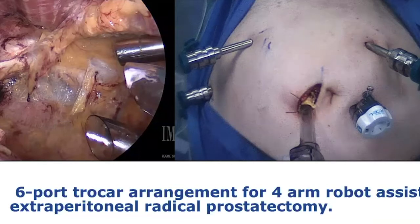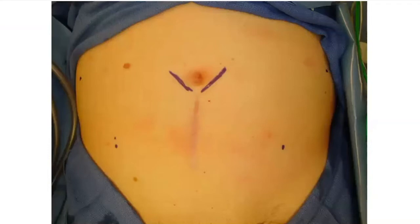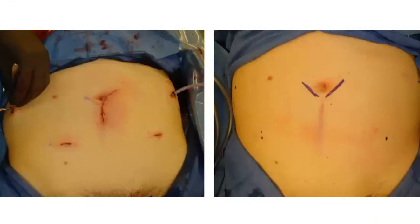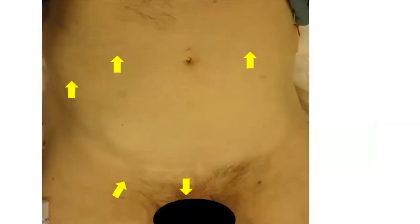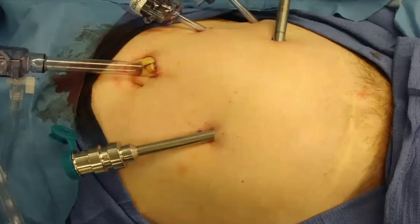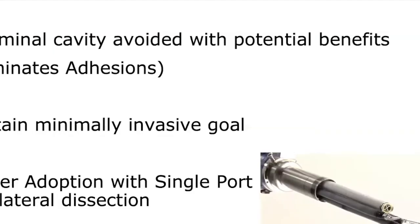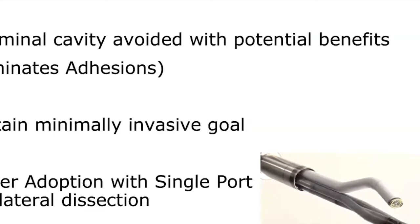If you have an XI robot, you have to exchange the trocar. This approach is ideal for large patients and patients without prior abdominal surgery. This gentleman had a hand-assisted nephrectomy in the past. For large prostates, it's certainly very accessible and doable. And this is an extreme patient who had a liver transplant and a kidney transplant — we protected the allograft by shifting slightly to the left, using three ports as opposed to a four-arm robot. The abdomen is avoided with potential benefits: you eliminate adhesions and maintain the less invasive goal.